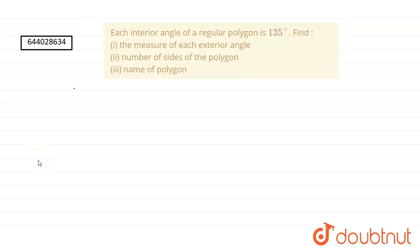So we have a question of rectilinear figures which says that each interior angle of a regular polygon is 135 degrees. Then we have to find the measure of each exterior angle, the number of sides of the polygon, and the name of the polygon.